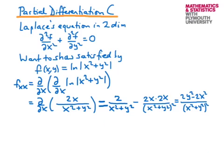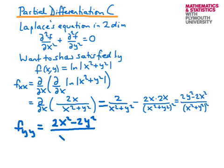In a very similar way we can calculate the second derivative with respect to y, f_yy. If you work through this, you get (2x² − 2y²)/(x² + y²)². You could almost guess this by symmetry: the original function log(x² + y²) is symmetric in x and y, so swapping x and y in the f_xx result immediately gives the f_yy result. But it's also good to check it explicitly.